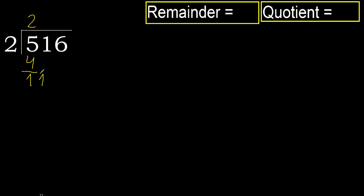Next: 11. 2 multiplied by 6 is 12. 12 is greater. 2 multiplied by 5 is 10, which is not greater. Ok, subtract.